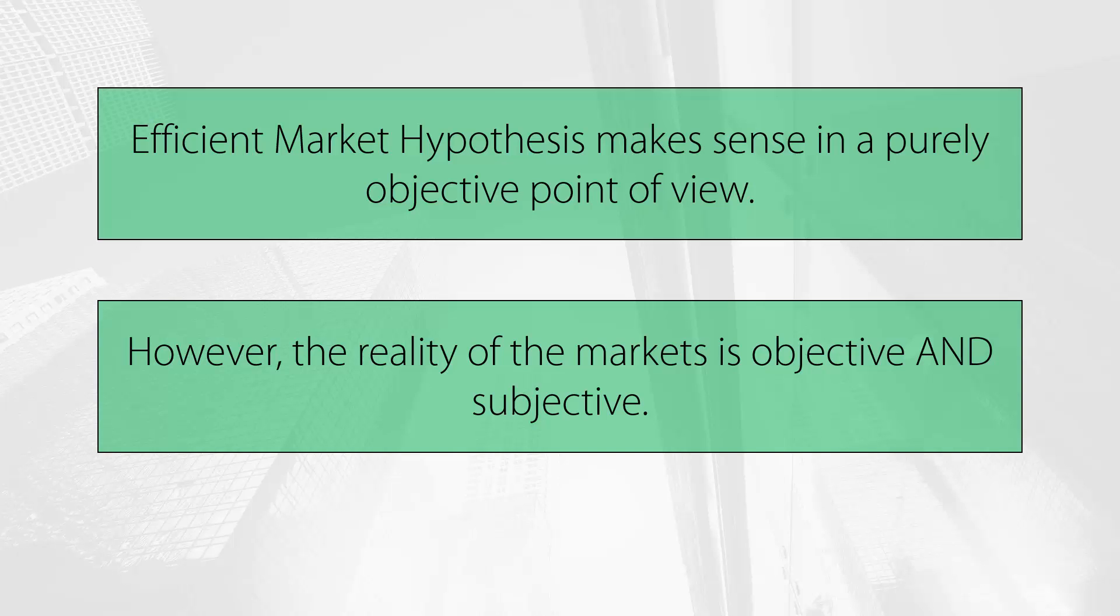Once again, the main driver of price fluctuations is precisely the discrepancy between the objective and subjective dimensions of how people interpret the financial markets. The problem with the efficient market hypothesis is that it considers the market as only objective. Without a complete understanding of how to judge the subjective dimension of the market, it is indeed impossible to make money in the long term.